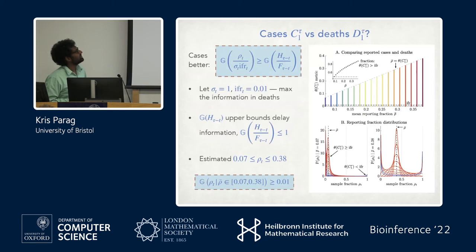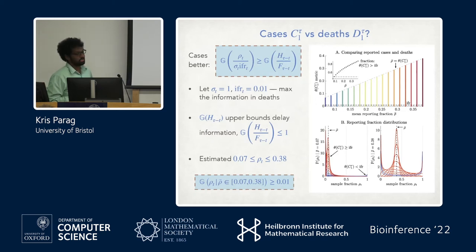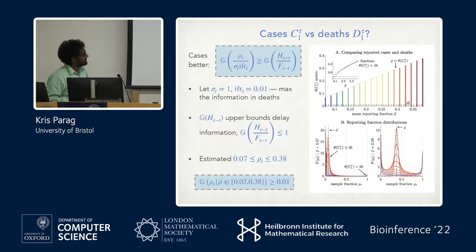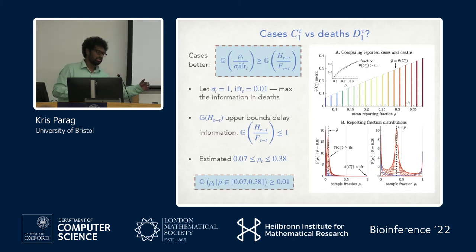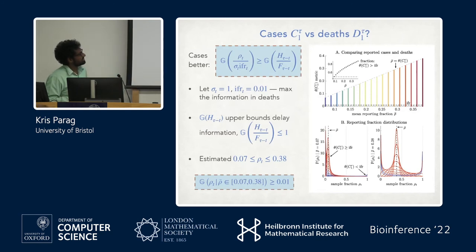The criterion is that the geometric mean of reporting rates divided by the death reporting rates has to be greater than or equal to an inverted delay mean. We give a lot of advantages to death data: perfectly reported deaths, an IFR of one percent (slightly higher than literature estimates), and we let the delay term be maximized at one. This simplifies to a much simpler criterion using reporting rate estimates from the literature.